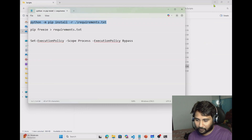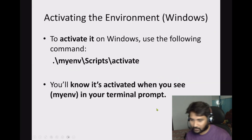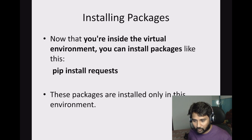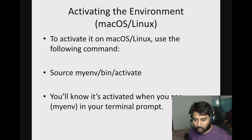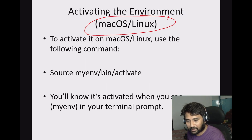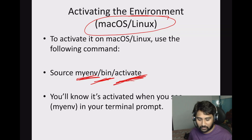Going back to the presentation: to activate the environment on Windows, go to the scripts folder and run the activate PowerShell script. To deactivate, use the `deactivate` command. On Mac OS or Linux, inside the environment you'll find a `bin` folder instead of scripts, and inside that you'll have the activate script to run.